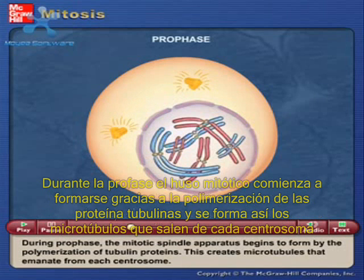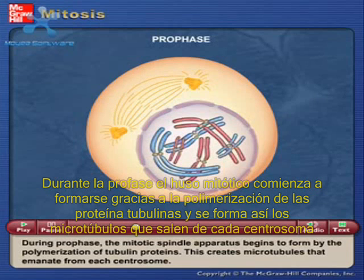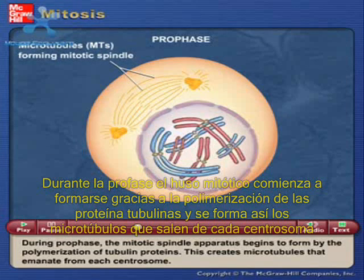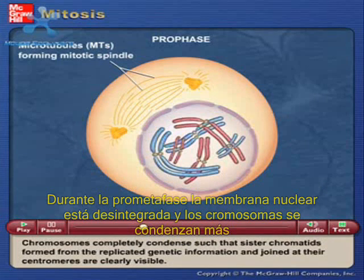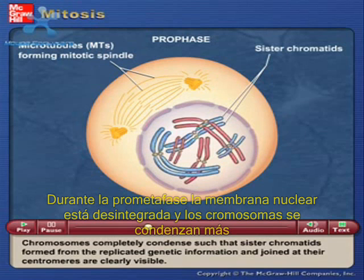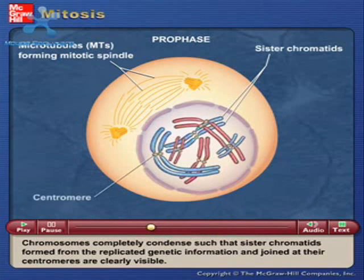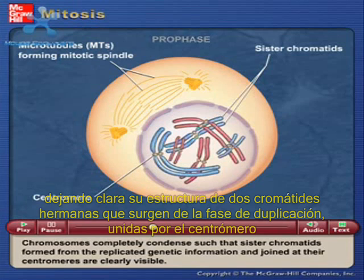During prophase, the mitotic spindle apparatus begins to form by the polymerization of tubulin proteins. This creates microtubules that emanate from each centrosome. Chromosomes completely condense such that sister chromatids, formed from the replicated genetic information and joined at their centromeres, are clearly visible.